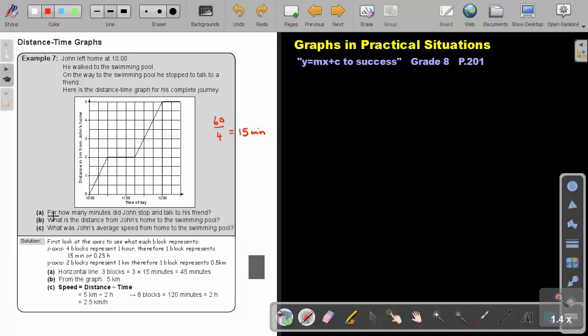So let's look at the question. For how many minutes did John stop and talk to his friend? So if you look here, you will see one, two, three blocks. Remember, one block represents 15 minutes. So three times 15 will be 45 minutes.